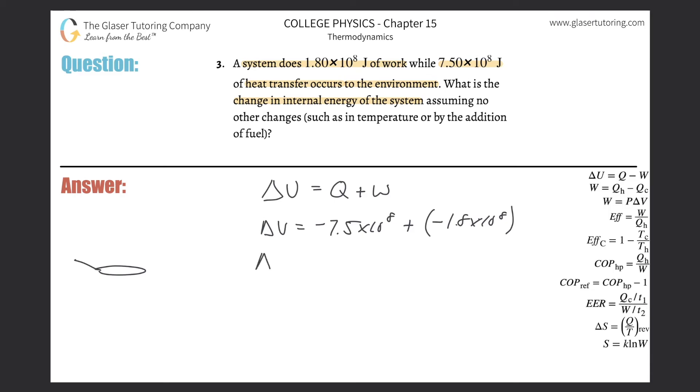And then literally just simply add it together. So here we go. It's essentially an addition, just a double negative, so negative 7.5 times 10 to the 8 minus 1.8 times 10 to the 8. And what do we get? We get negative 9.3 times 10 to the 8.